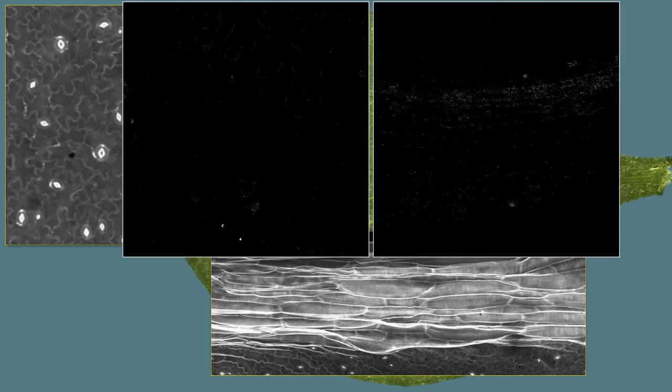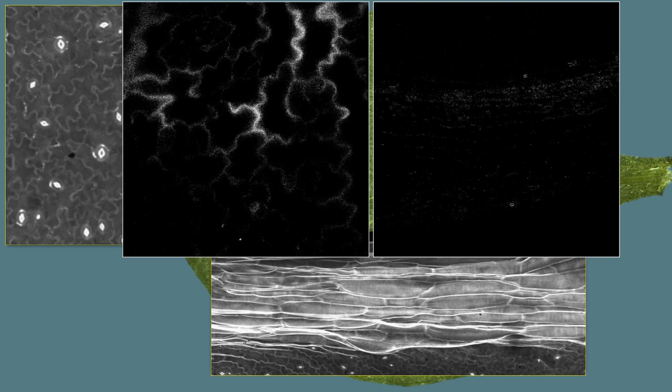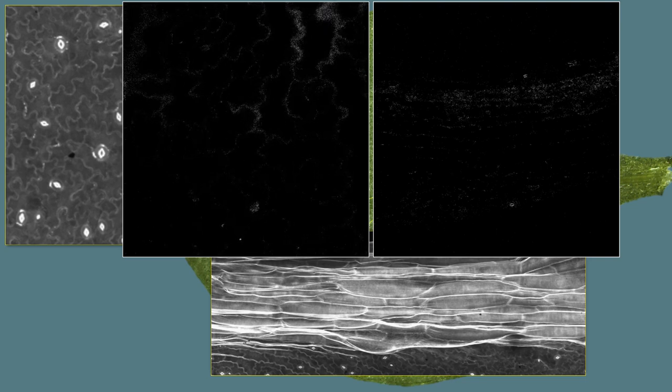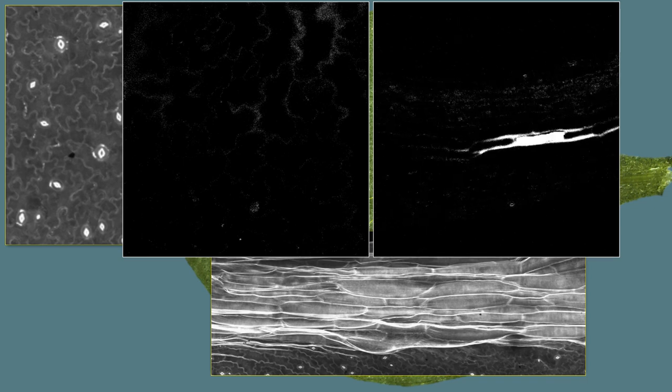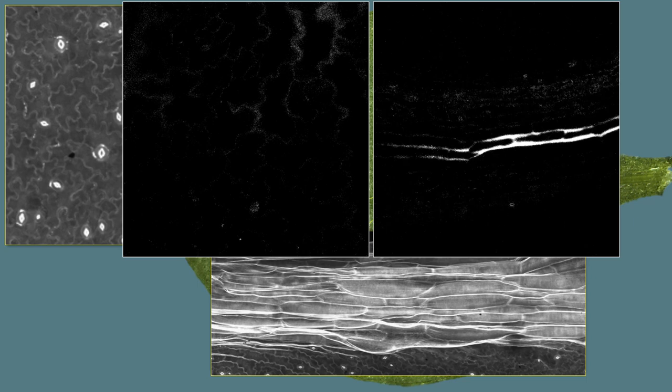We used confocal microscopy to photoactivate a small fluorescent dye very similar in size to auxin in one of these puzzle piece-like cells and saw that the activated dye spreads to neighboring cells, more or less the same in all directions. When we did the same on these elongated cells, then we observed a spread primarily in the longitudinal direction.